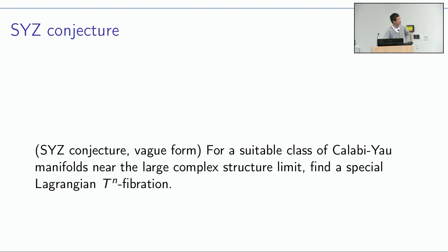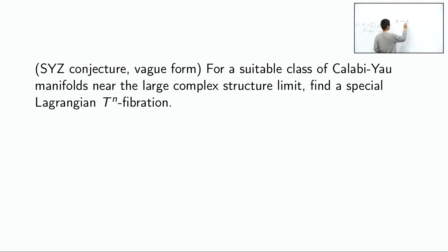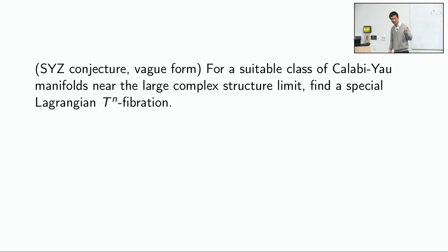What is the SYZ conjecture? It stands for Strominger-Yau-Zaslow. The original paper was a physics proposal conveying the spirit of the conjecture. Roughly, the conjecture says you want to consider Calabi-Yau manifolds near a certain limit known as the large complex structure limit. The goal is to find a special Lagrangian torus fibration — a map from X to some base where the fibers are supposed to be special Lagrangian tori, allowing for singular fibers.